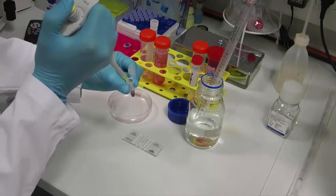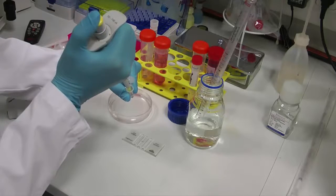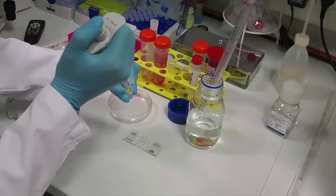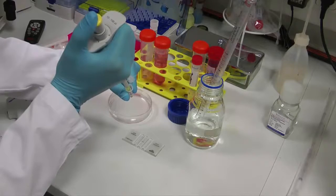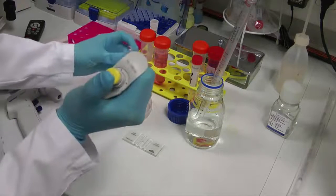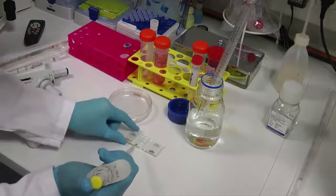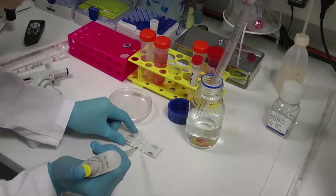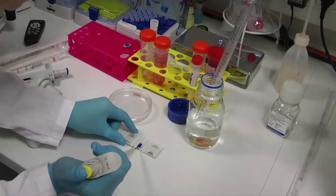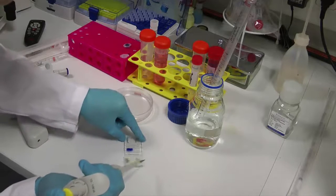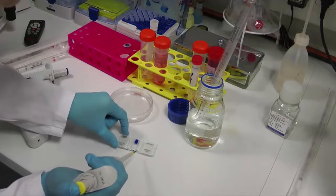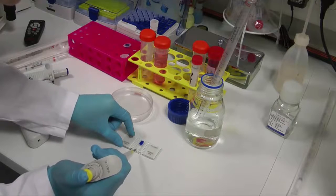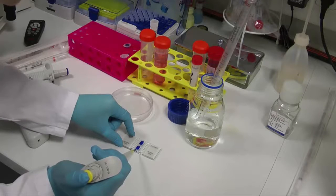Prepare the hemocytometer by placing the coverslip over the counting surface. Load the counting chamber with the cell suspension, around 4 µL per counting area, by placing the pipette tip at the edge of the coverslip and gently expel the cell suspension. The area under the coverslip fills by capillary action. In most cases the chamber has 2 counting areas that can be loaded independently.